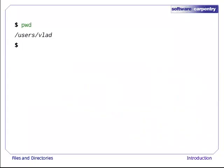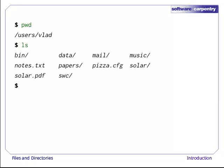What if we want to change our current working directory? pwd shows us that we're still in Users/Vlad, and ls, without any arguments, shows us its contents.